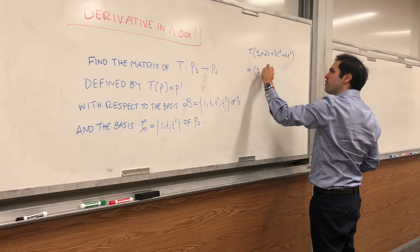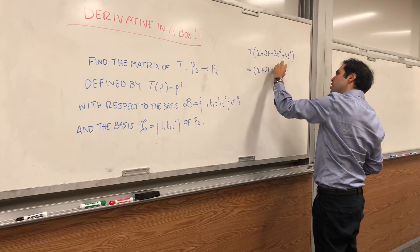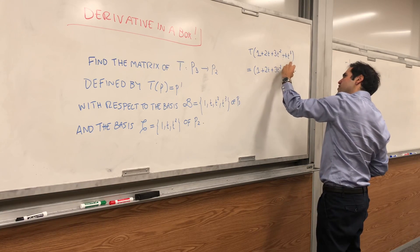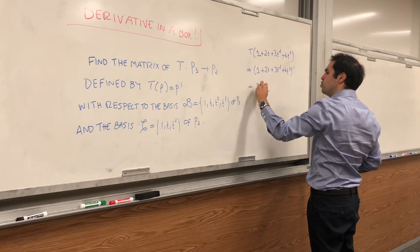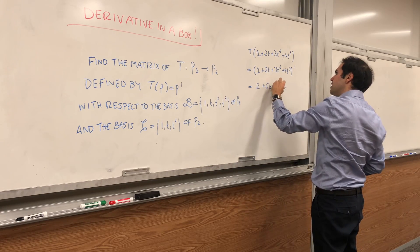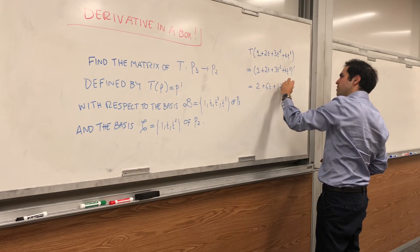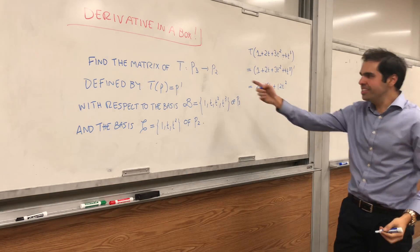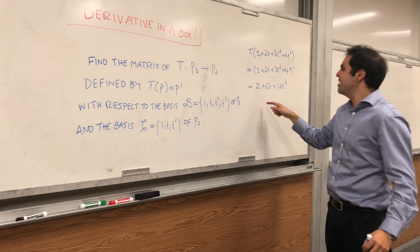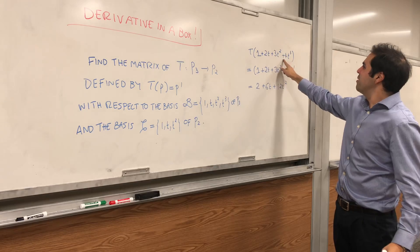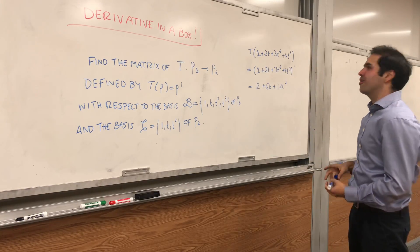For example, let's calculate T of 1 plus 2t plus 3t squared plus 4t cubed. It's the derivative of this polynomial, so 2 plus 6t plus 12t squared. And notice, indeed, T spits out a polynomial of degree less than or equal to 2 by the power rule.